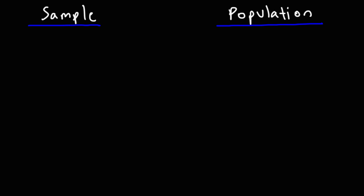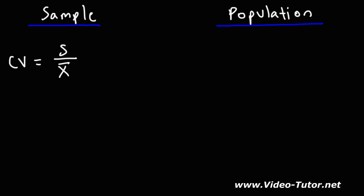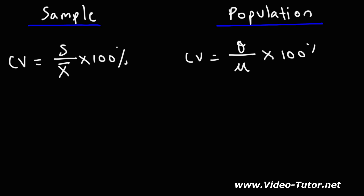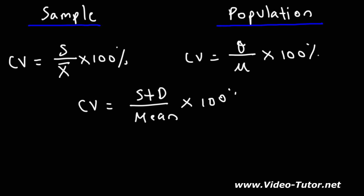The coefficient of variation (CV) for the sample is the sample standard deviation divided by the sample mean, times 100%. For the population, it is the population standard deviation divided by the population mean, times 100%. In both cases it's the ratio of standard deviation to mean, reported as a percentage.